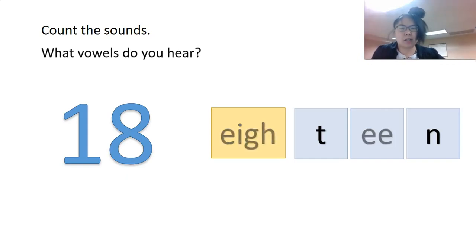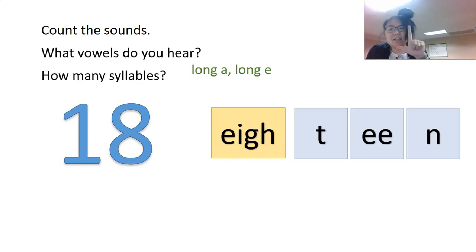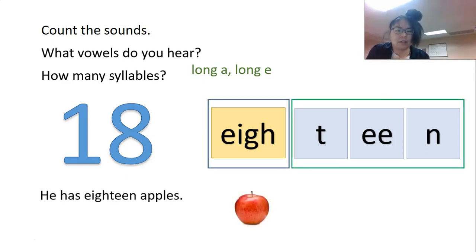So what vowels do you hear? We already talked about the long A. That's the entire first sound, A-teen, and long E. Eighteen. You also probably know how many syllables. Eighteen. Two syllables. A-teen. Very good.